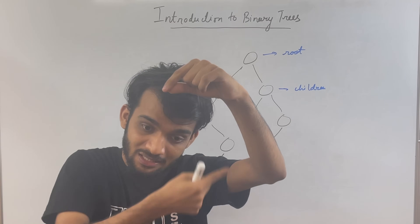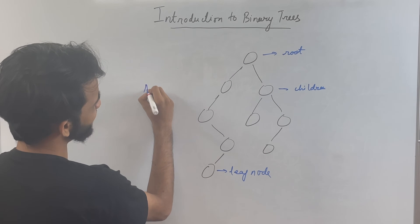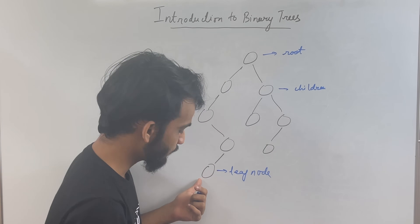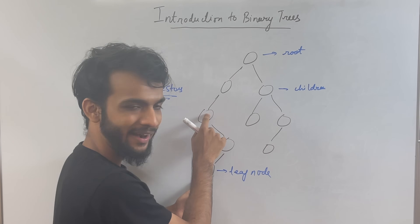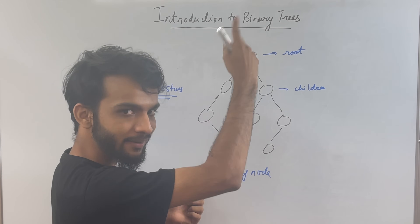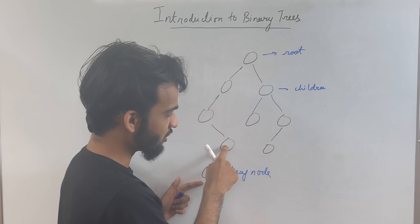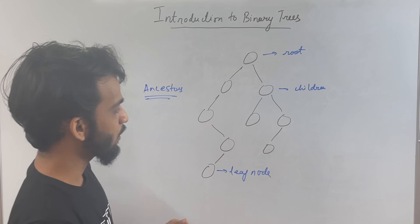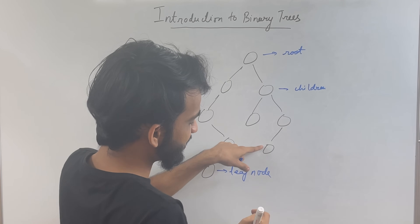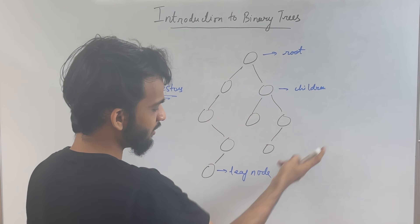The node and the nodes beneath it form the subtree of that node. There's one more concept known as ancestors. If you stand at a node, this is the parent, this is the grandparent, and so on. All the grand-grand-grand-parents are called ancestors. For this node, this is an ancestor, this is an ancestor, and this is an ancestor. I hope you understood the concept of ancestors, root, children, and leaf nodes.